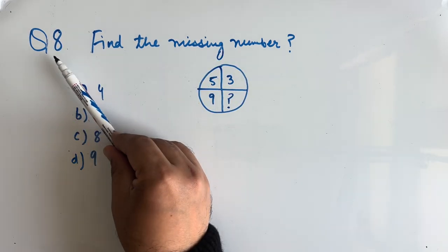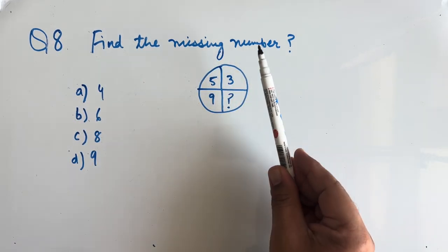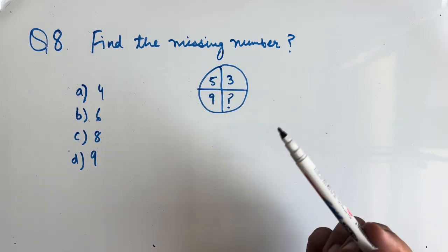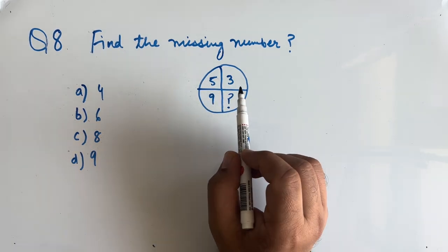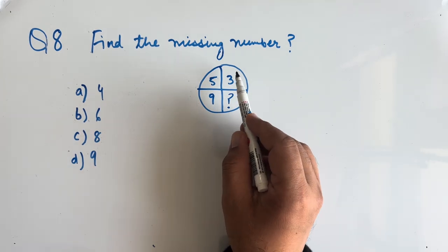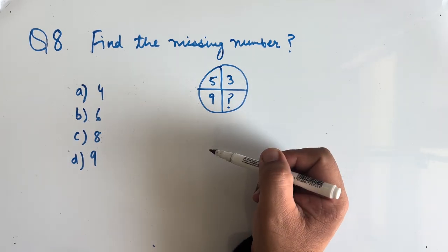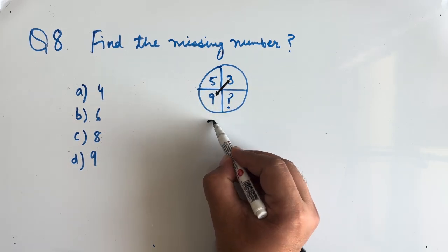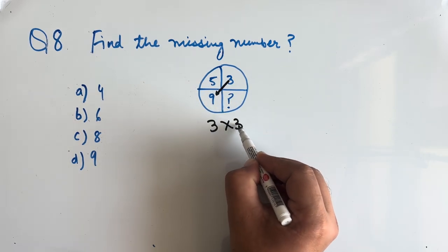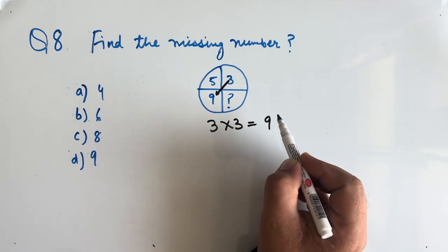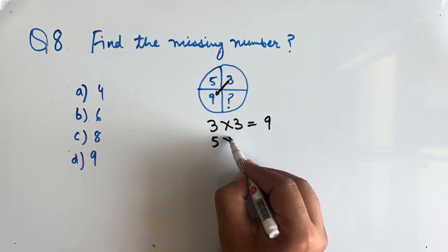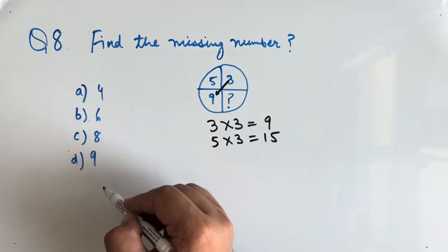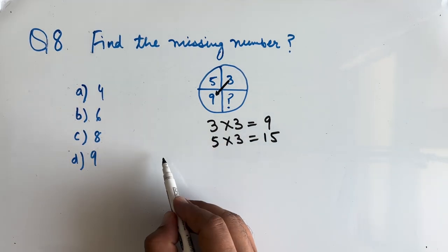Question number 8: find the missing number — 3, 5, 9, and the missing number. In this type of question we have to find the logic clockwise, anticlockwise, or diagonal wise. Opposite to 3 is 9; if we multiply 3 by 3 we get 9. In the similar way, if we multiply 5 by 3 we get 15. But 15 is not in the option, so we will try another way.